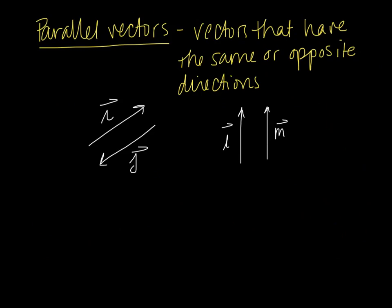Parallel vectors are vectors that have the same or opposite directions. Notice I and J are obviously parallel lines — they are not going to intersect — and they have opposite direction but are parallel. Similarly, L and M have the same direction but are still parallel. You can just think of parallel lines — same idea with parallel vectors. It doesn't matter which direction they are going; they are just never going to intersect.